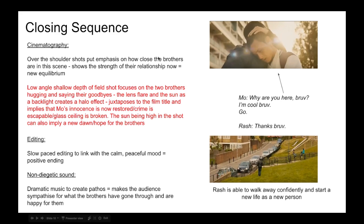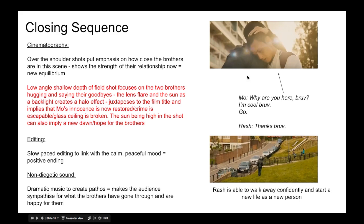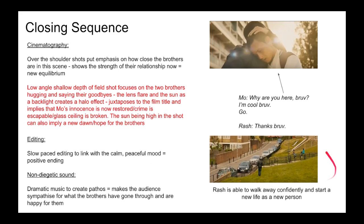In the closing sequence, there is an over-the-shoulder shot that puts emphasis on how close the brothers are, showing the strength of their relationship and creating a new equilibrium as they are no longer in conflict. There are also low-angle shallow depth-of-field shots that focus on the two brothers hugging and saying their goodbyes. The lens flares and the sun behind them as a backlight create a halo effect, which juxtaposes the film title of being a devil, showing that Mo has been restored to innocence. The slow-paced editing links with the calm, peaceful mood, and the final shot shows Rash walking away confidently, starting a new life where he feels accepted and confident with his sexuality and identity.